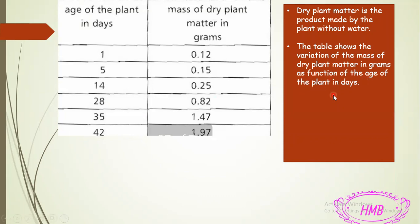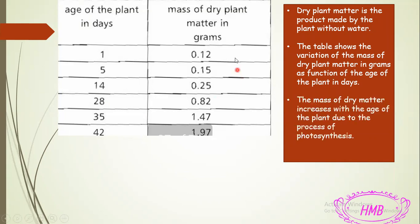Now let's analyze the table. We see that the mass of dry matter is increasing with age. On day 1 the mass was 0.12 g; on day 5 it became 0.15 g; on day 14 it was 0.25 g; on day 28 it was 0.82 g; on day 35 it was 1.47 g; on day 42 it became 1.27 g. Analyzing the table means reading what you see as results.